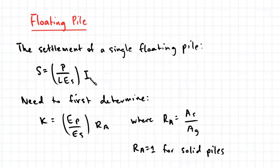First we need to determine the pile stiffness factor K, which is given by this expression here, where EP is the modulus of the pile, and RA is the ratio of the pile section and the gross area bounded by the outer circumference of the pile.